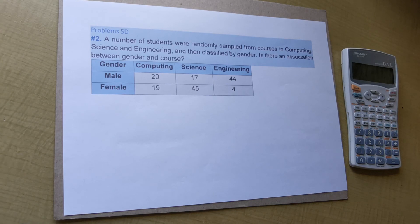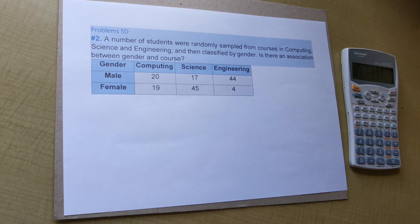The null hypothesis states that there is no association between gender and course. And the alternative hypothesis states that there is an association between gender and course.